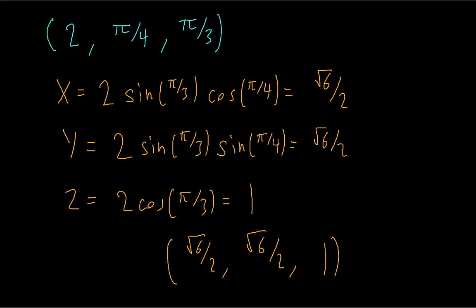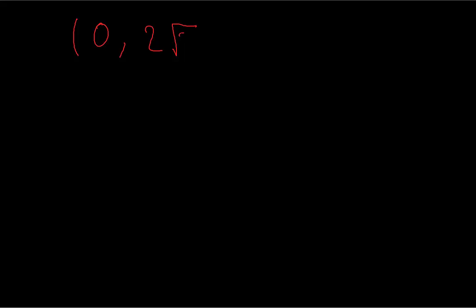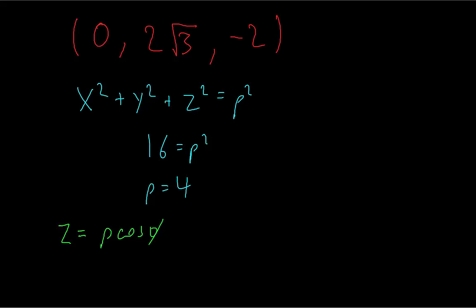Now say we have a point in rectangular coordinates and we want to convert to spherical coordinates. The easiest thing to do first is find rho using the x squared plus y squared plus z squared formula. So we find that rho is equal to 4. After that, it's easy to find z because it only involves rho and phi, while x and y also involve theta.